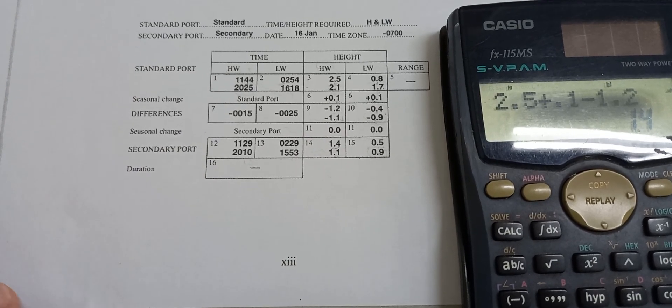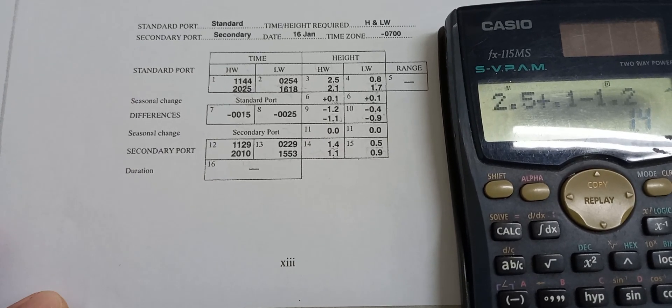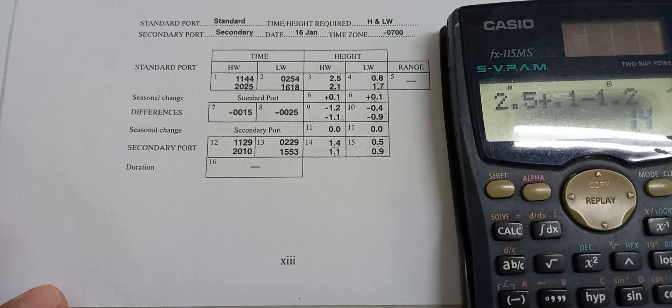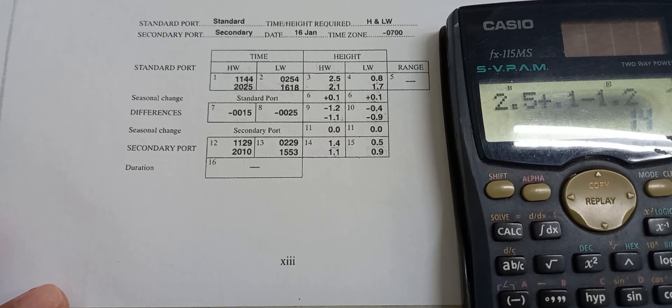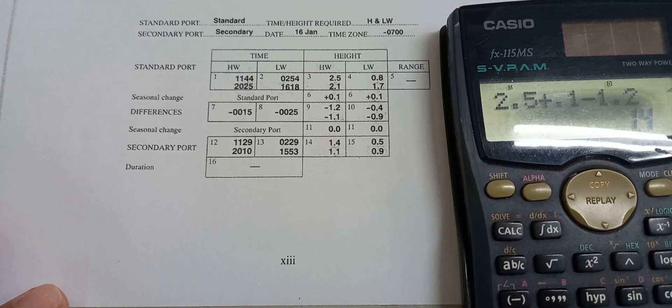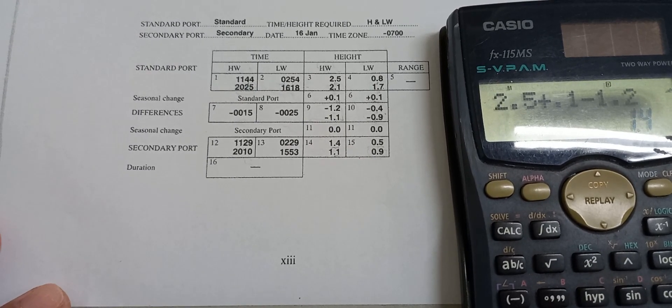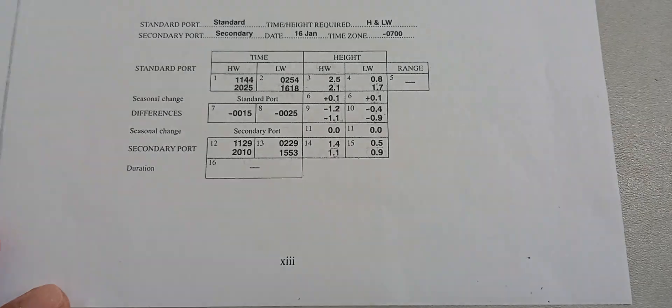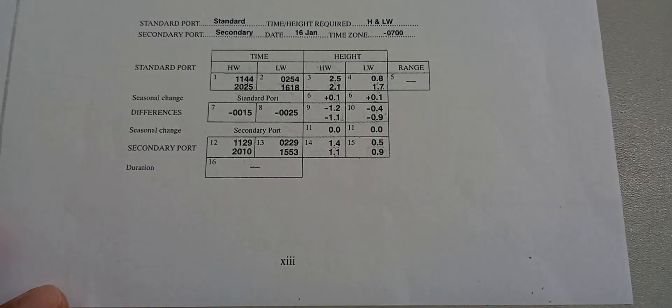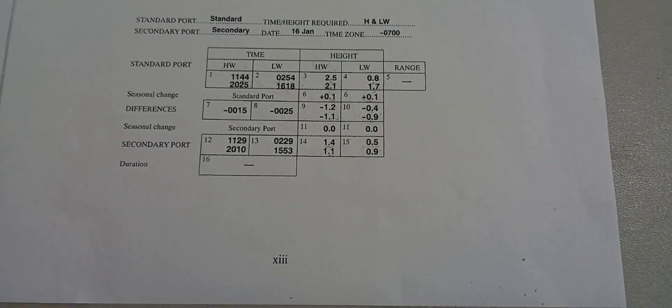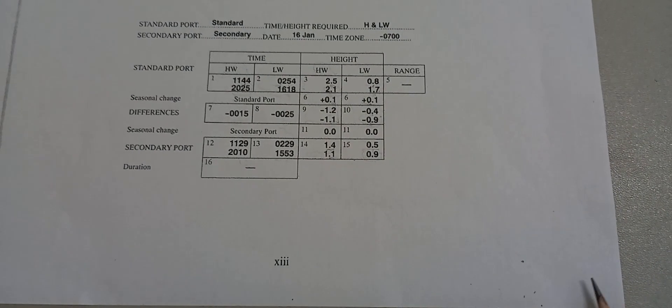That's how we compute the times and heights of high and low waters at a secondary port using the diurnal inequality example.